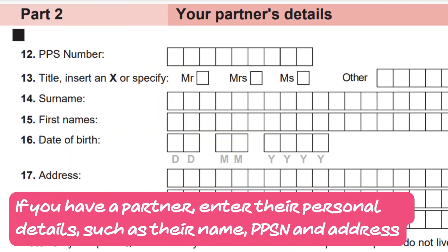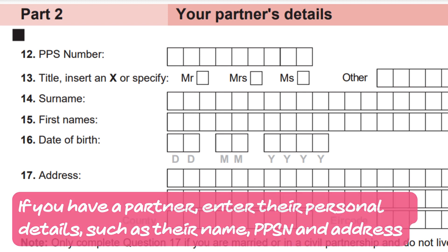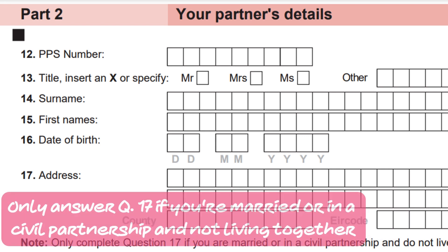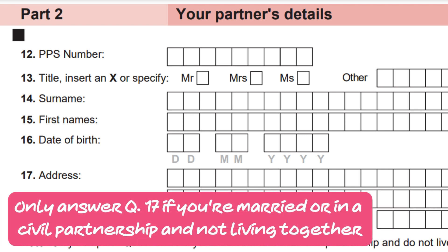Step 2: If you have a partner, enter their personal details, such as their name, PPSN, and address. Only answer Question 17 if you are married or in a civil partnership and not living together.